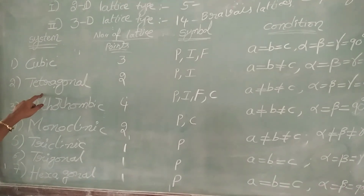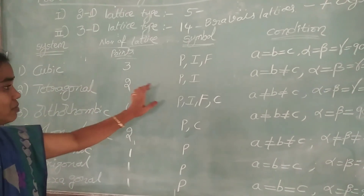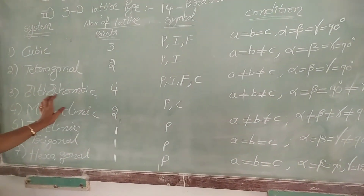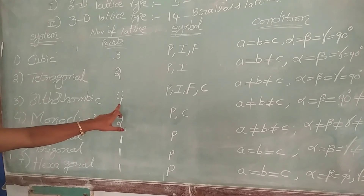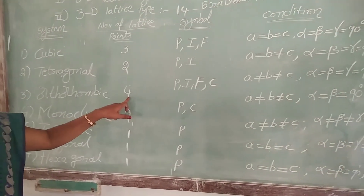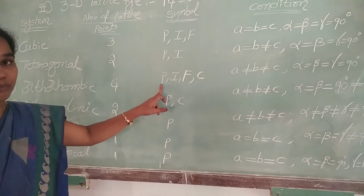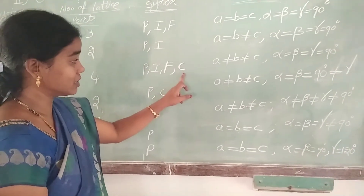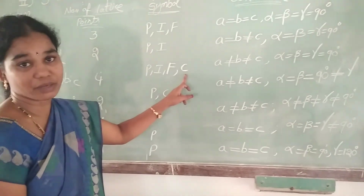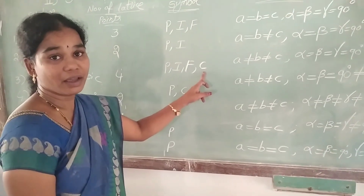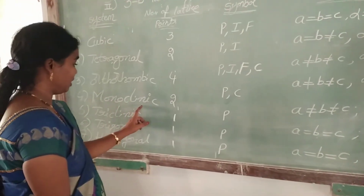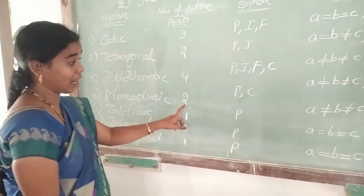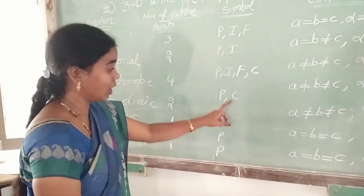Tetragonal crystal systems are 2 types: P and I. Next, orthorhombic crystal systems have 4 types of Bravais lattices. They are primitive, body centered, face centered, and C, which is base centered crystal system. C means base centered crystal system.